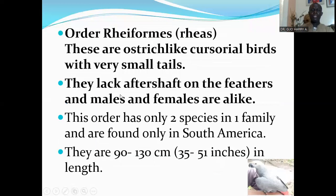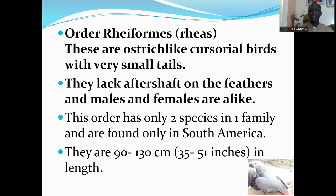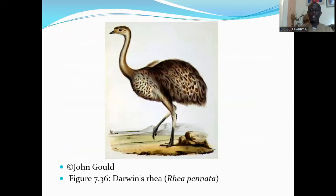The next order is Order Rheiformes, which consists of the rheas. These are ostrich-like cursorial birds with very small tails. They lack aftershafts on the feathers and males and females are alike. This order has only two species in one family and they are found only in South America. They are 90 to 130 centimeters in length. Here is Darwin's rhea.